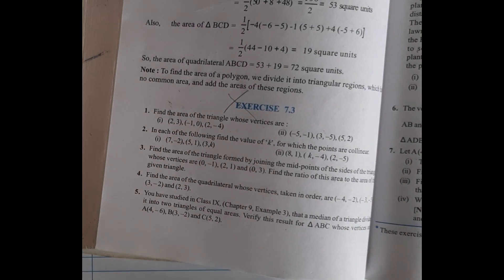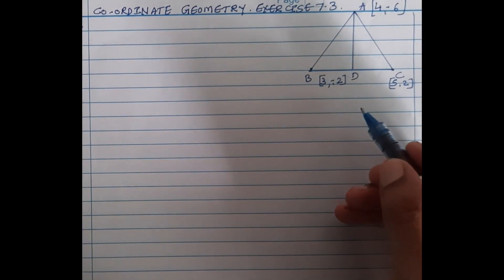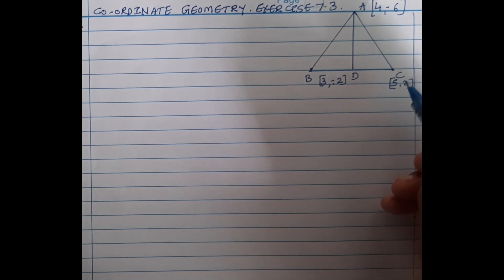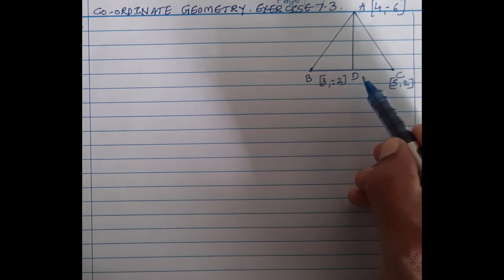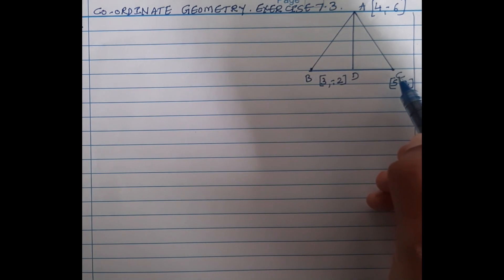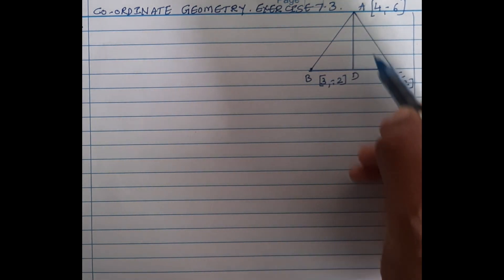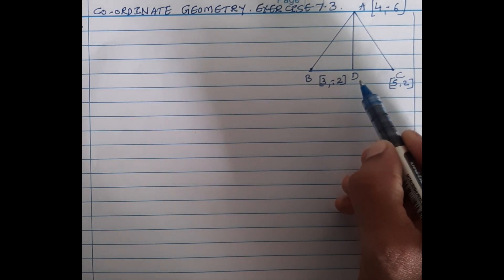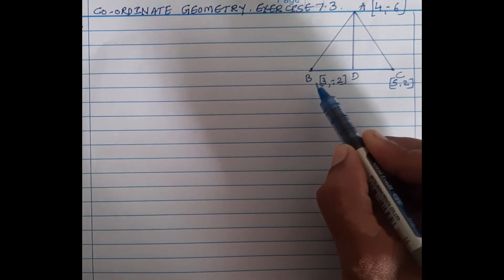Now we will understand the meaning of the question. Here I have drawn a triangle. In the question, triangle ABC has three vertices given: A, B, C. The median of triangle ABC is shown. In triangle ABC, D is the midpoint of side BC.